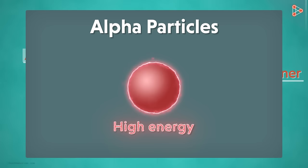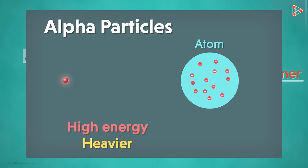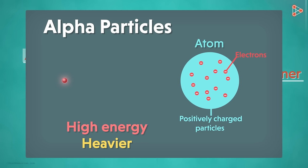But why did he select alpha particles in the first place? The alpha particles were having high energy and were heavier as well. So, if the atom is like a pudding of positively charged particles with electrons embedded in it, then the particles will pass straight through it.